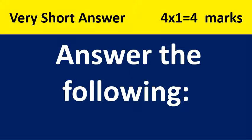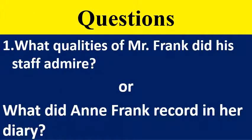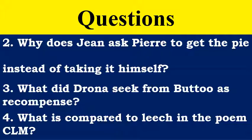For very short answers, you will have totally four questions. Answer the following. Question one has an option: 'What qualities of Mr. Frank did his staff admire?' or 'What did Anne Frank record in her diary?' — any one of these two. Question two: 'Why does John ask Pierre to get the pie instead of taking it himself?' 'What did Drona seek from Ekalavya as recompense?' 'What is compared to a leech in the poem CLM?' These are the four questions for four marks.